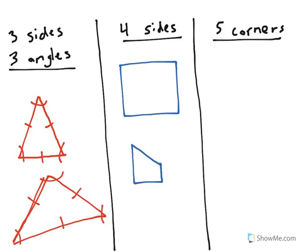And draw a shape with five corners. An easy way to do this is to just draw the corners first, one, two, three, four, five, and then connect them with lines, three, four, five.